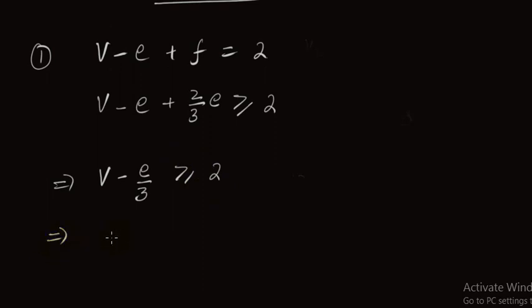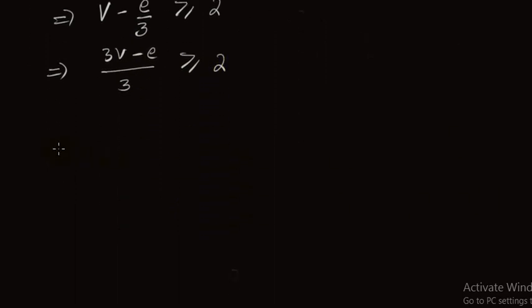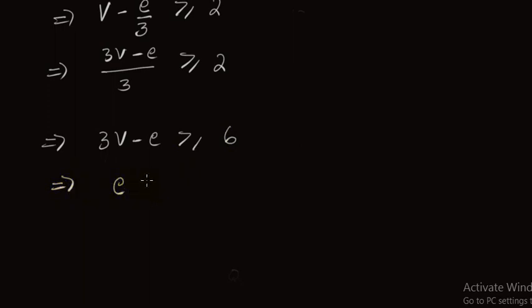Taking LCM, we have 3v minus e is greater than or equal to 6. So we have the relation: e is less than or equal to 3v minus 6.